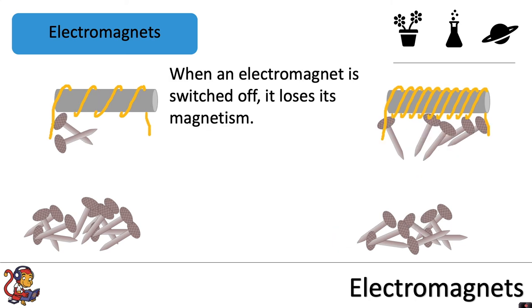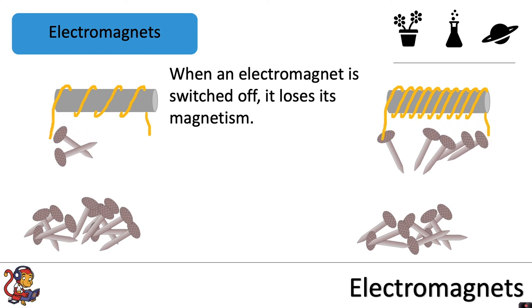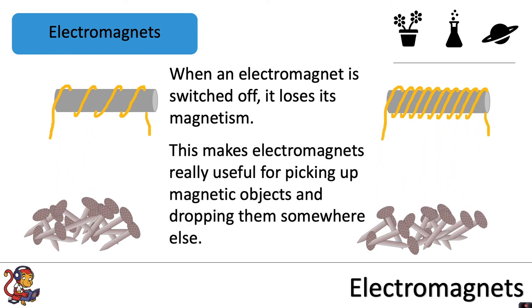When an electromagnet is switched off, it loses its magnetism. This makes electromagnets really useful for picking up magnetic objects and dropping them somewhere else.